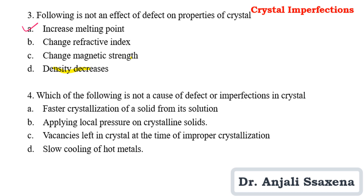Question 4: Which of the following is NOT a cause of defects in crystals? Options: A) Faster crystallization from solution, B) Applying local pressure on crystalline solids, C) Vacancies left during improper crystallization, D) Slow cooling of hot metals. Slow cooling of hot metals does not produce any crystal imperfection — it is not a cause of imperfection. So option D is the answer.